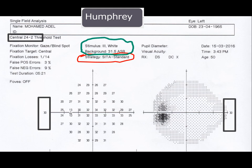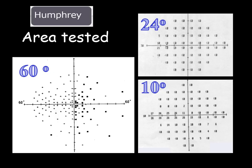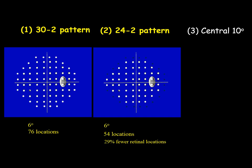The stimulus size is size 3, color is white. In the Humphrey, you can test 10 degrees, 24 degrees, or 60 degrees. The difference between the old 30 pattern and the newer 24 pattern is that in the 24 pattern, the outermost ring is omitted except for two points in the nasal area. This reduces the total points tested by 29%, making the test quicker. In both patterns the distance between test locations is 6 degrees, but the number of points tested in 30 degrees is 76, while in 24 degrees it is 54.